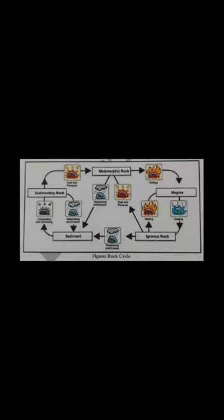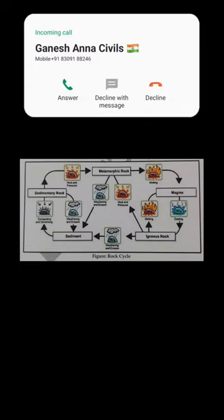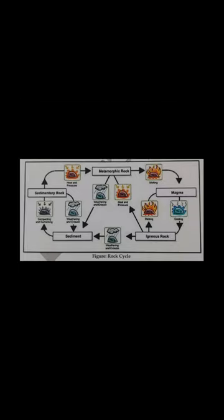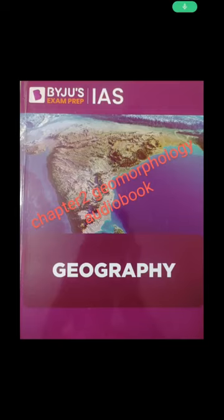Rock cycle: rocks do not remain in their original form for long but may undergo transformation from one class to another in the cycle of rock change. This cycle, operating over the geological time scale, involves various physical, chemical, and biological processes that create, transform, and recycle crustal minerals. The cycle connects sedimentary rocks (through heat and pressure) to metamorphic rocks, (through melting) to magma, (through cooling) to igneous rocks, and (through weathering and erosion) back to sediments, (through compacting and cementing) back to sedimentary rocks. Landforms and their evolution: geomorphology is a science that studies landforms on the earth's surface and involves interpretive descriptions.